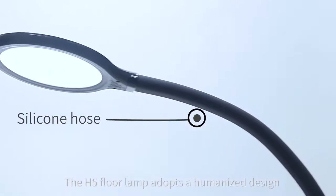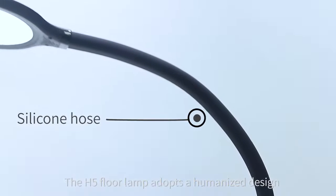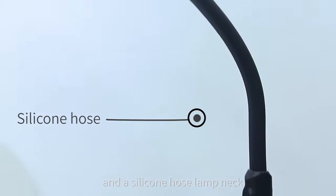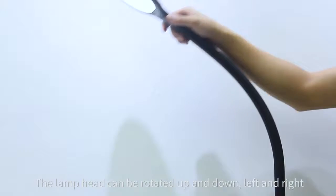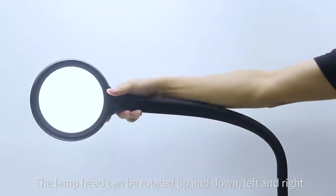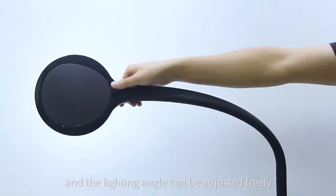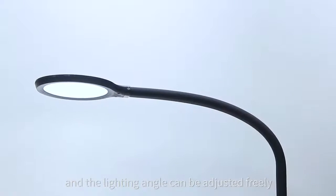The H5 floor lamp adopts a humanized design with a silicon hose lamp neck. The lamp head can be rotated up and down, left and right, and the lighting angle can be adjusted freely.